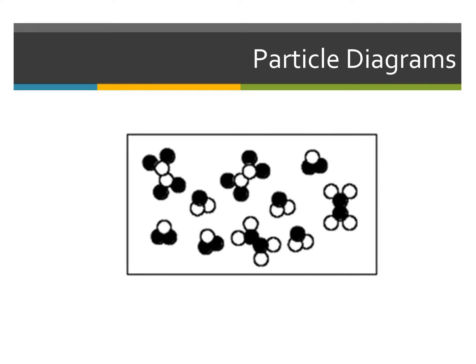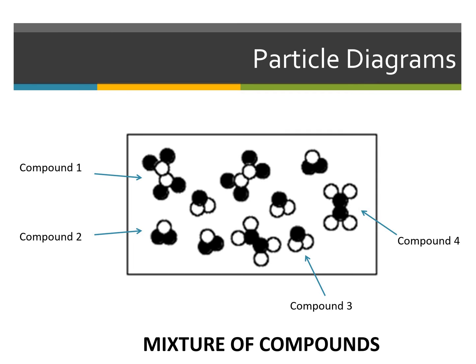If we look at this item, we have different ratios chemically combined, which means we're seeing different compounds. That's compound number one, compound number two, and we also have compound number three — so we have three different compounds in one place. I can differentiate them based on the ratio of elements that are made. And that is compound number four, which is different from compounds two and three and similar to compound one but with a different chemical composition. Since we have several different compounds in one area that are not chemically combined, this is a mixture of compounds.